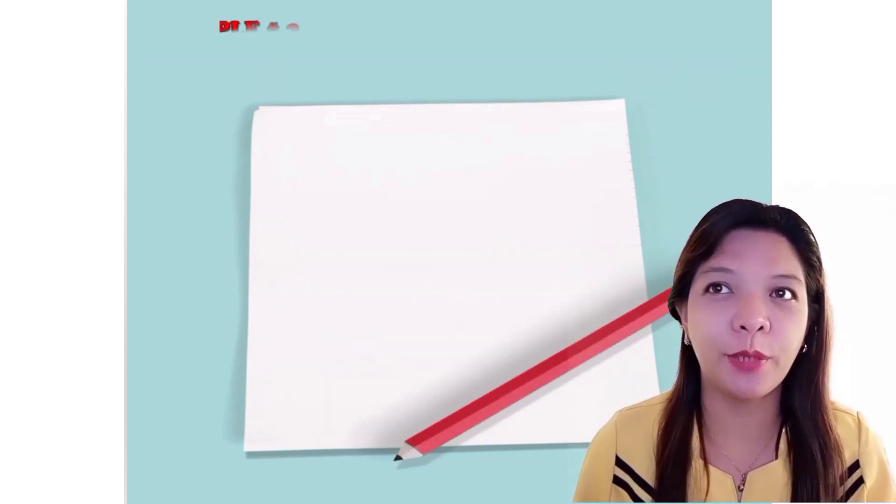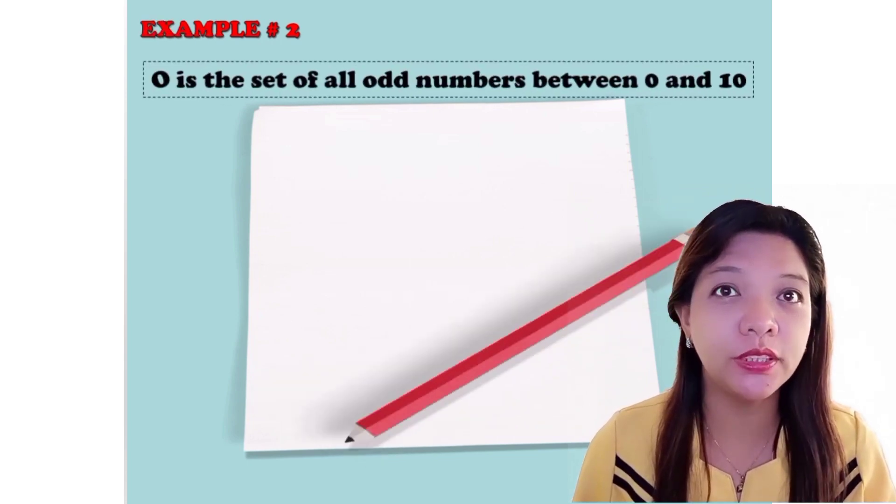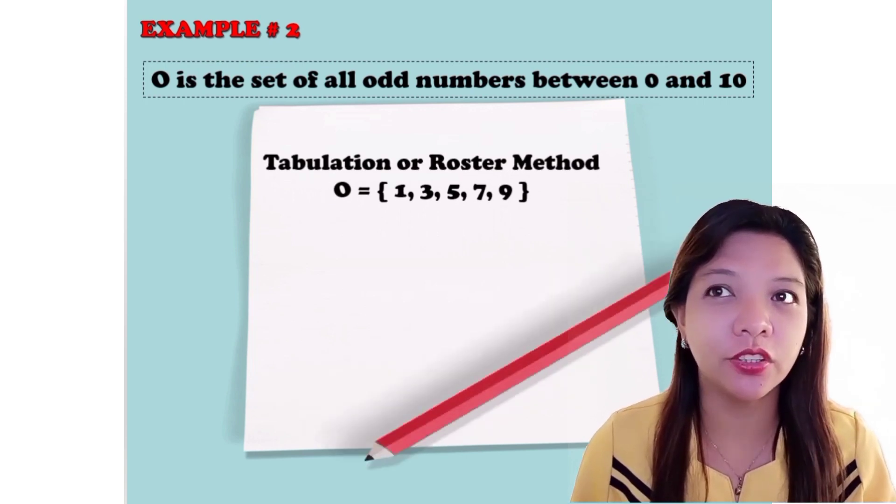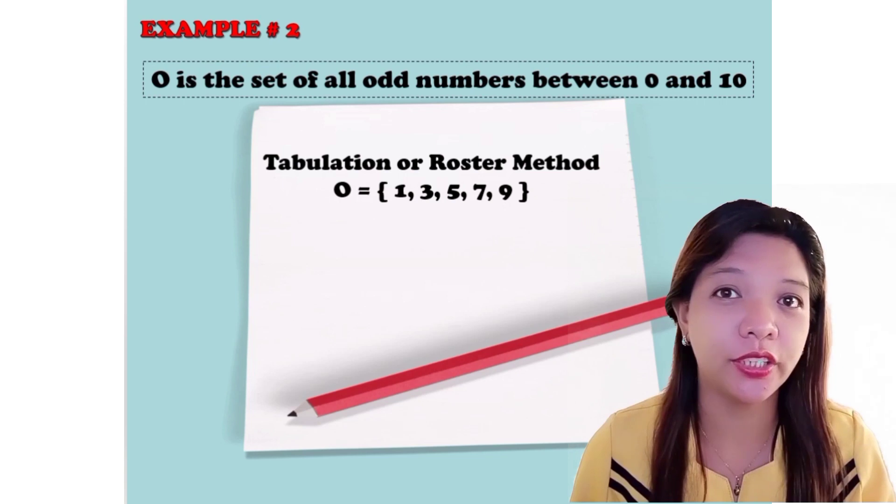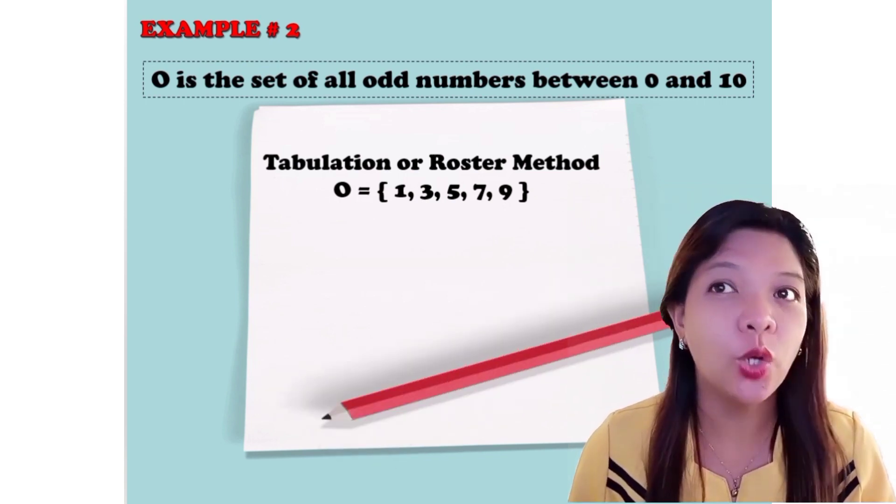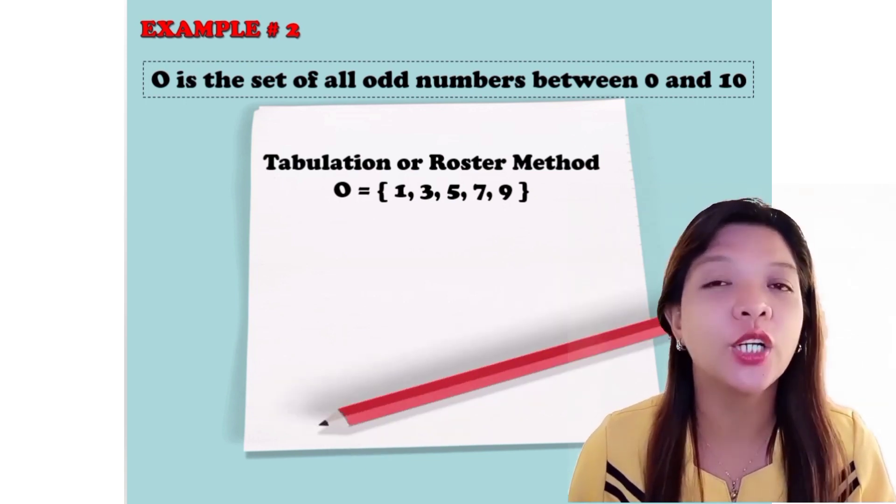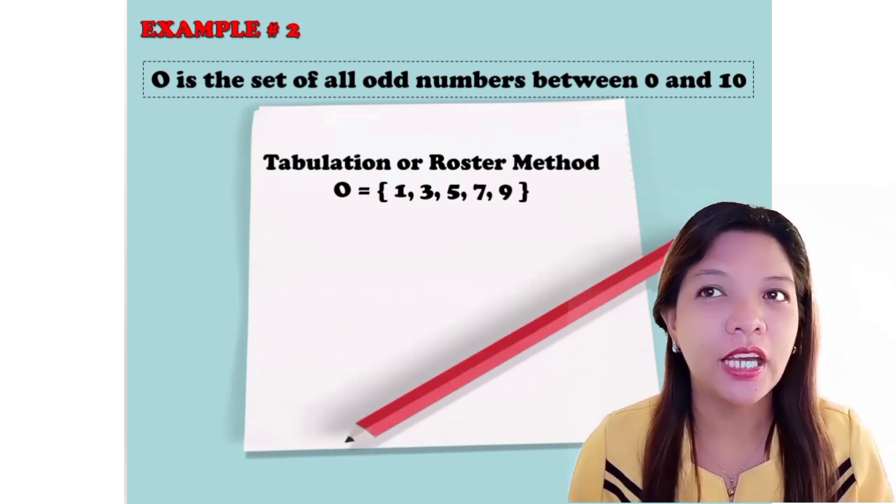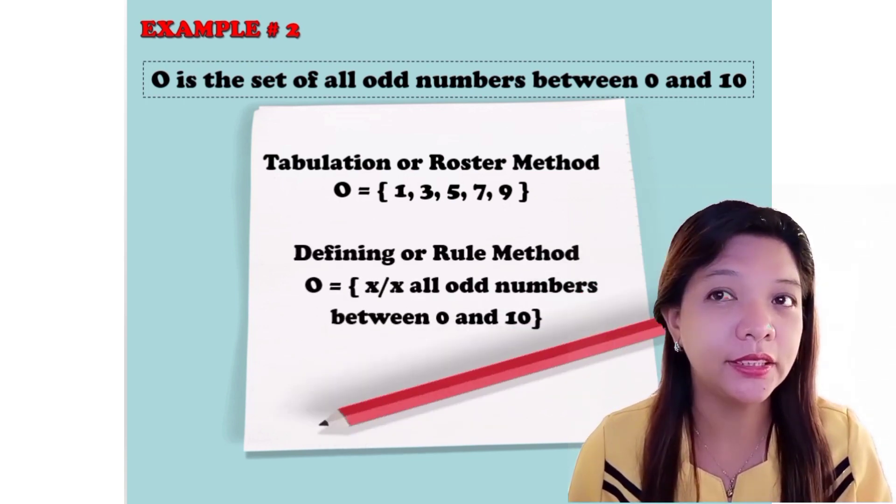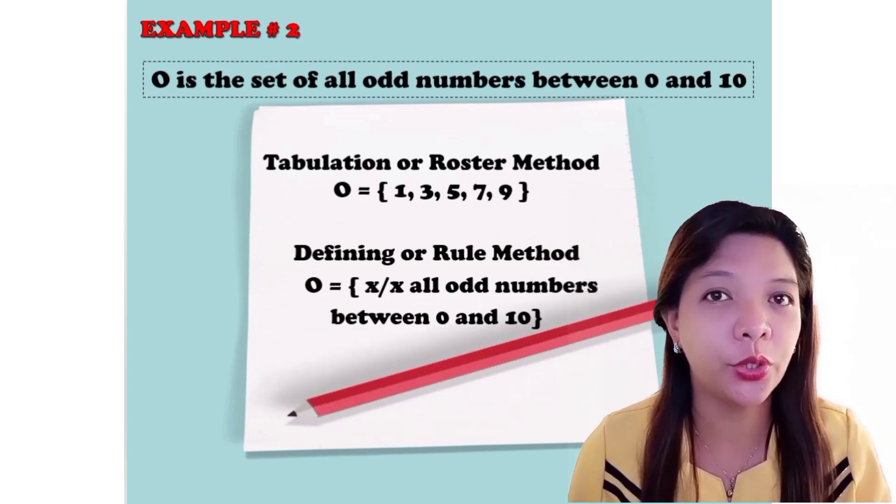Now, let's have example number 2. O is a set of all odd numbers between 0 and 10. Using tabulation or roster method, our answer is O equals open brace 1, 3, 5, 7, 9, close brace. And using defining or rule method, O equals open brace X such that X, all odd numbers between 0 and 10.